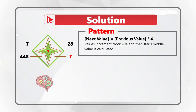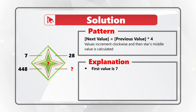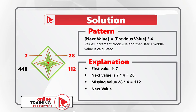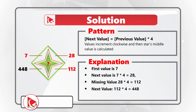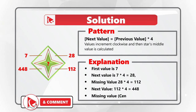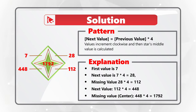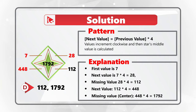Let's use the formula to calculate the missing value. The first value at 11 o'clock is 7. The next value is 28, which is calculated as 7 multiplied by 4. The first missing value at 5 o'clock is calculated as 28 multiplied by 4, which equals 112. The next value at 8 o'clock is 112 multiplied by 4, which equals 448. The missing value in the center of the star is 448 multiplied by 4, which equals 1792. So the correct answer is choice D: 112 and 1792.